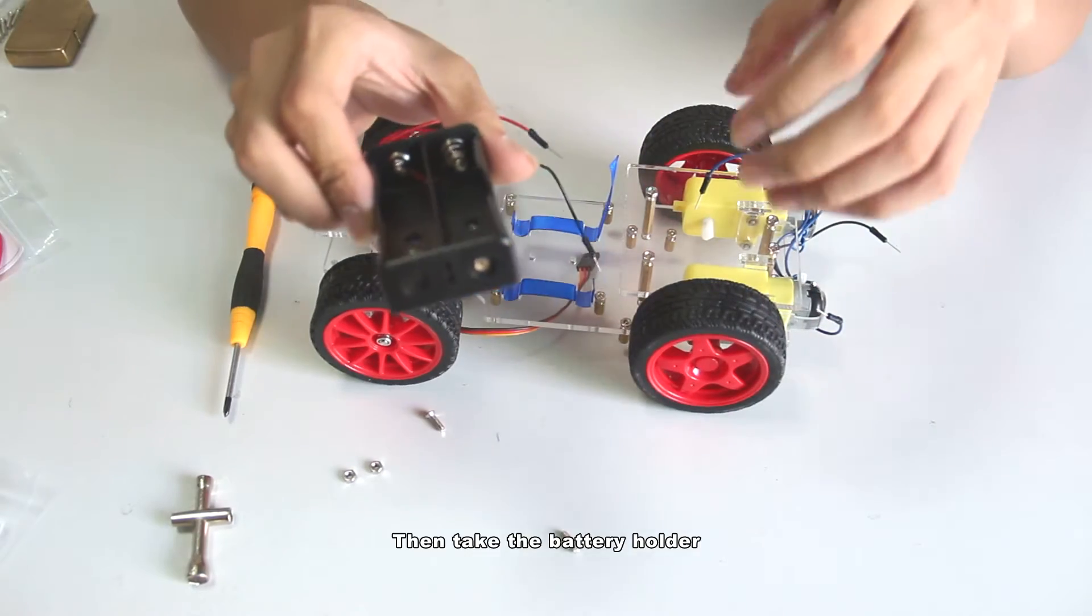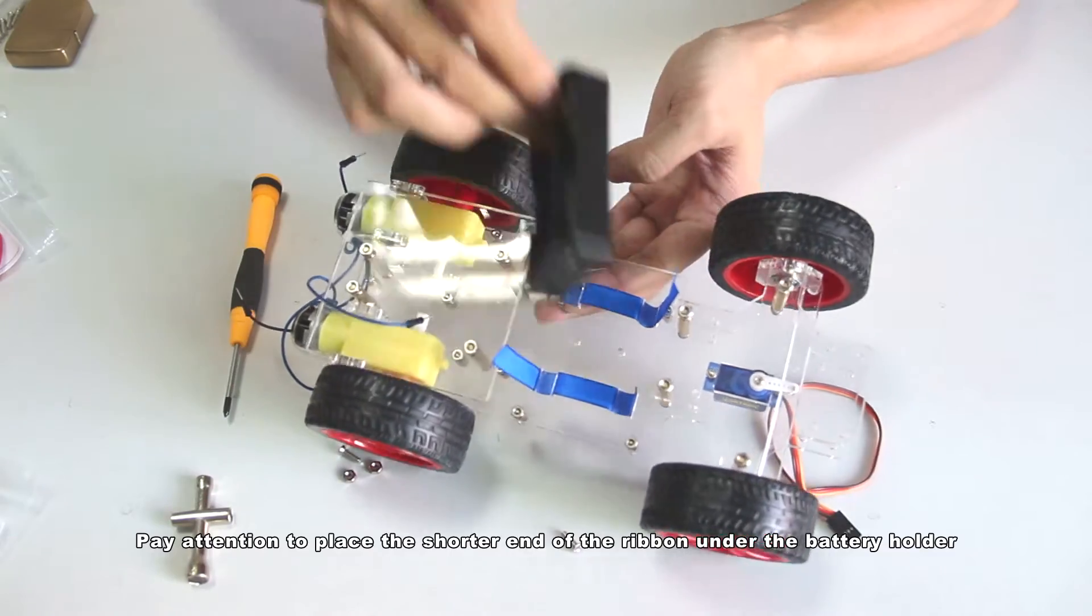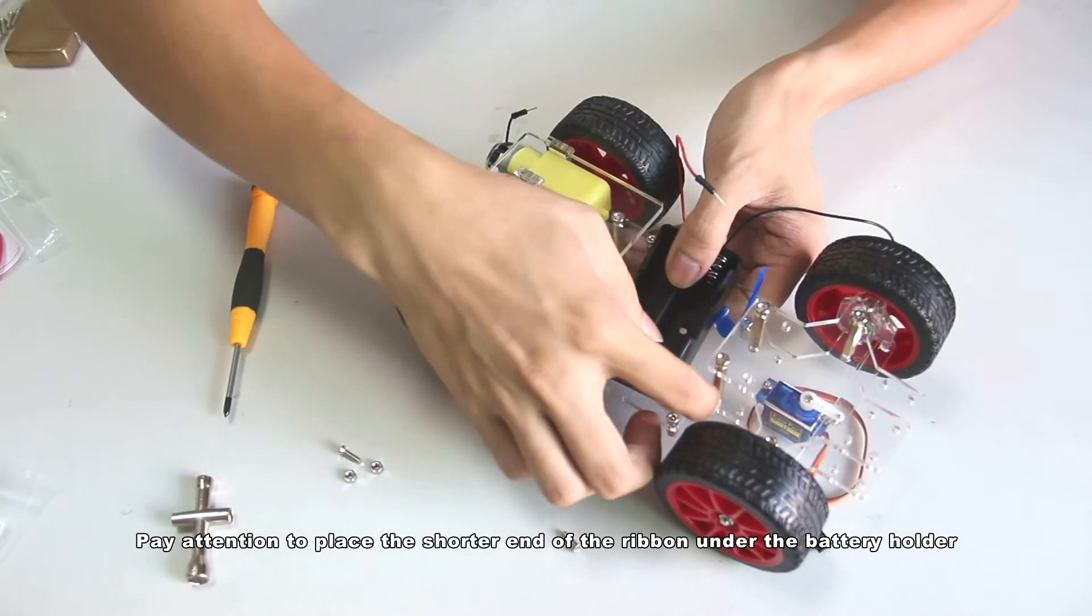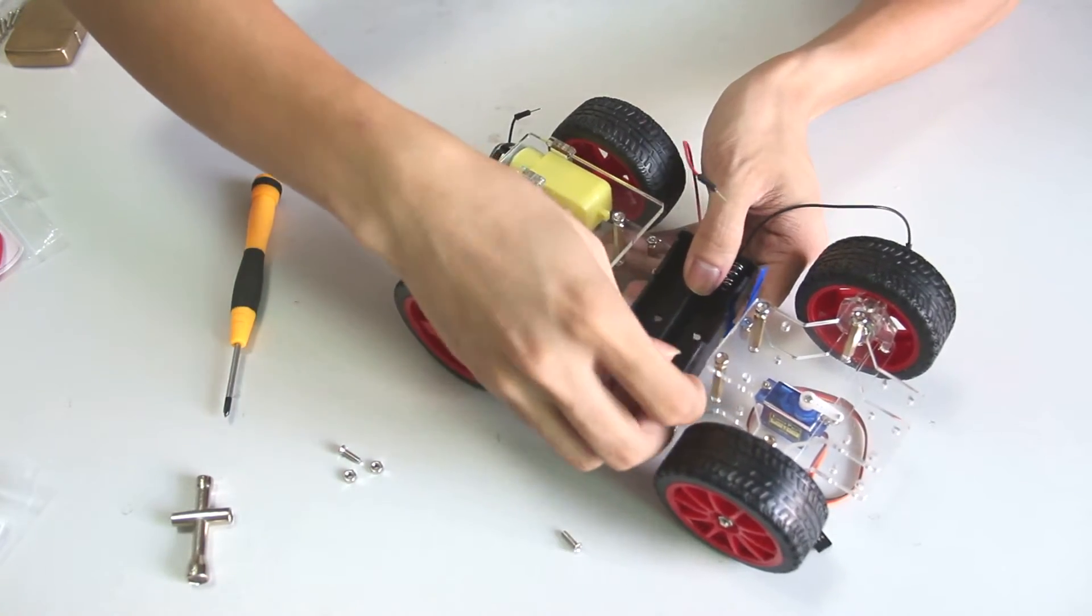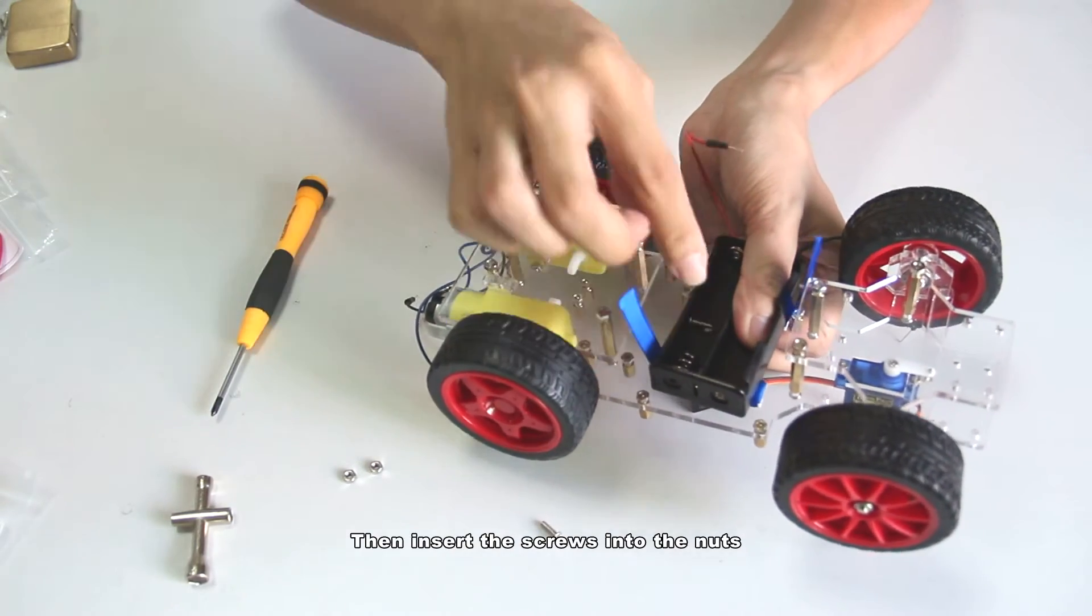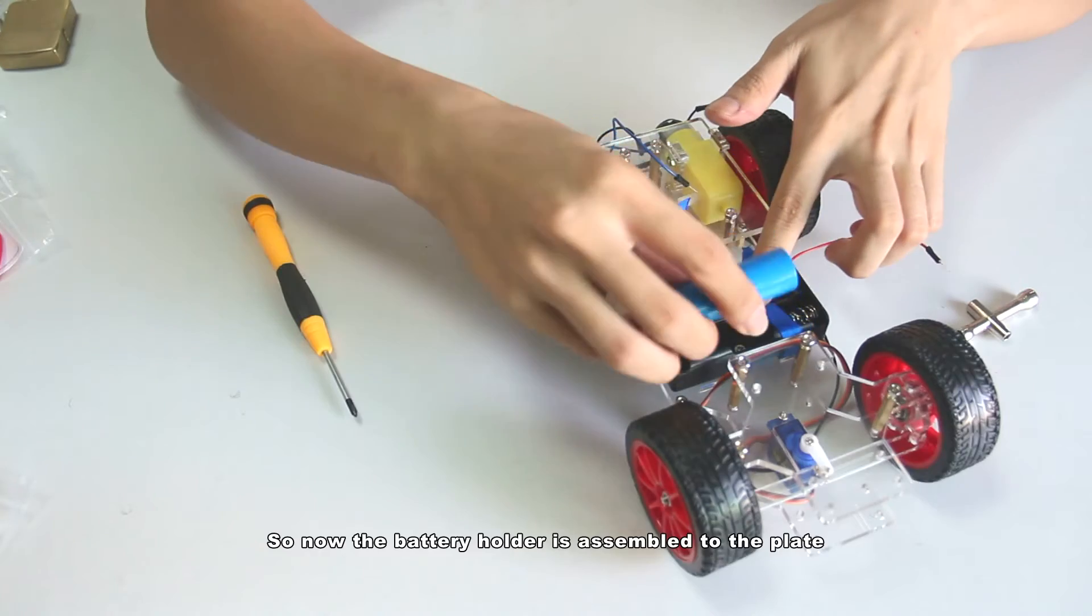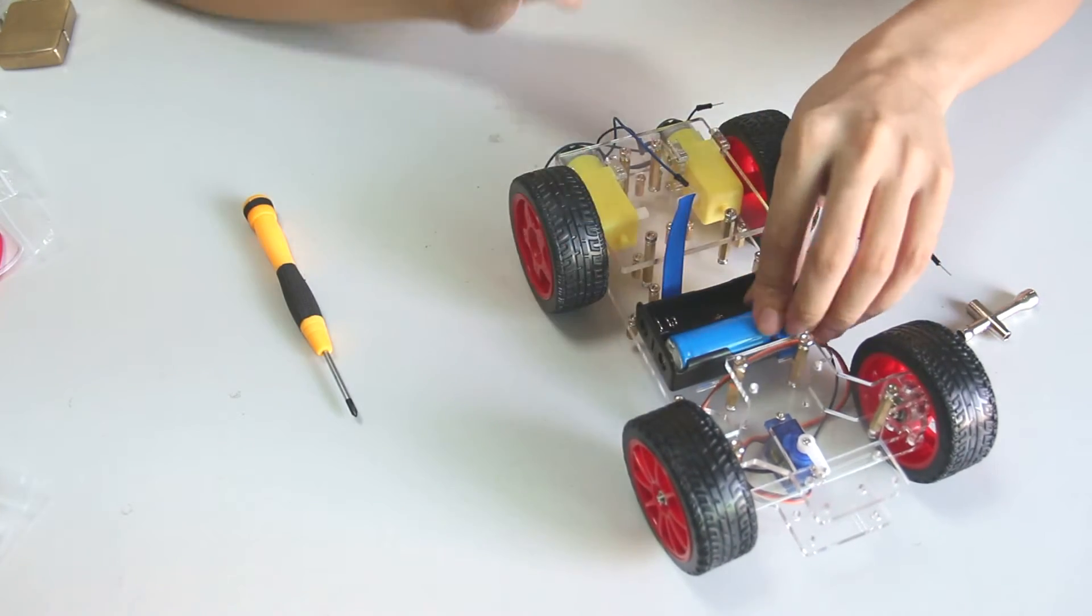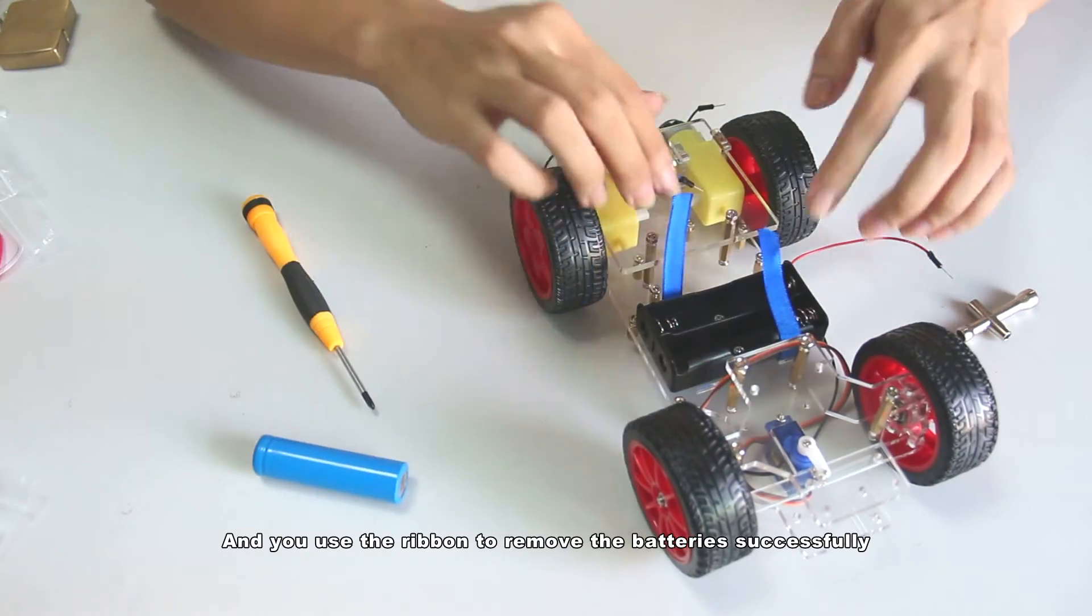Then take the battery holder. Pay attention to press the shorter end of the ribbon under the battery holder. Then insert the screws into the nuts. So now the battery holder is assembled to the plate and you may use the ribbon to remove the batteries successfully.